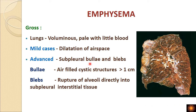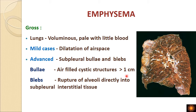In severe cases we see bullae and blebs. Bullae are air-filled cystic spaces more than one centimeter in diameter. Blebs occur when there is rupture of the alveoli directly into the subpleural interstitial tissue, so they appear on the surface of the lung just adjacent to the pleura. Bullae are simply cystically dilated air spaces greater than one centimeter in diameter.